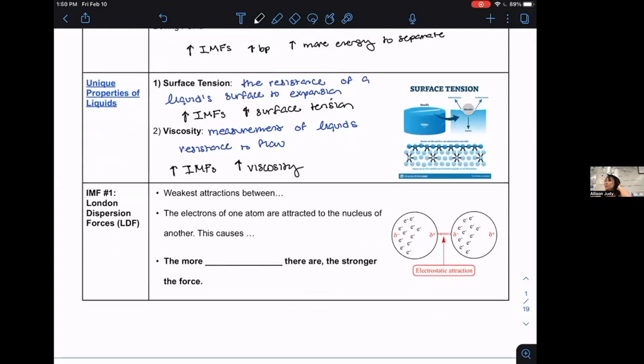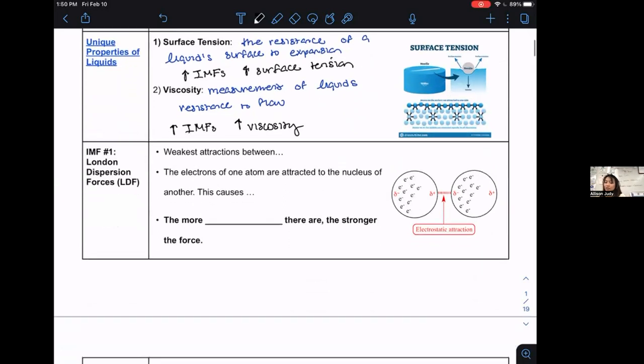There are three types of IMFs as far as characteristics of IMFs, or I guess you could say the nature of IMFs. The first is called London dispersion forces, known as LDFs. They're the weakest type of IMF a molecule can experience with another molecule. It's the attraction between covalent molecules, and it occurs when the electron of one atom is attracted to the nucleus of another. This causes a temporary dipole to form, a temporary polarity to form.